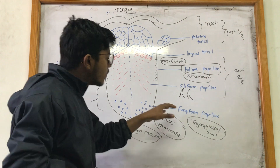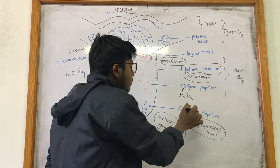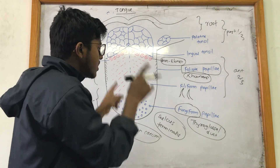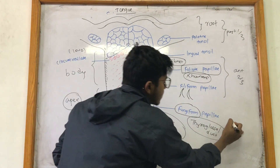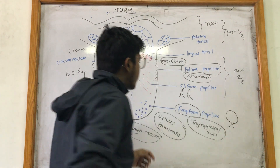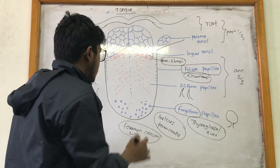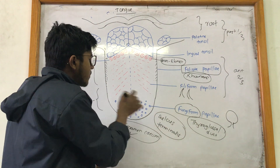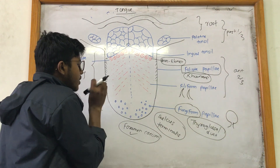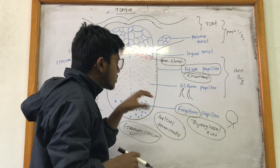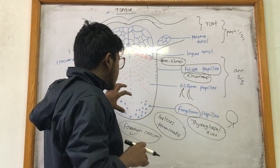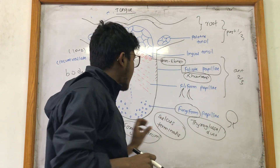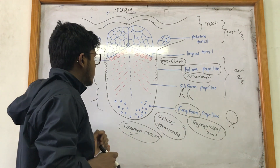The fourth type is fungiform papilla. As the name suggests, they are dome-shaped like a mushroom. These are most abundant near the apex of the tongue and are the smallest and most numerous near the apex.